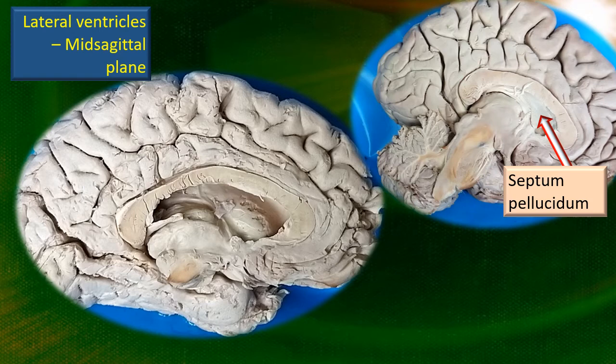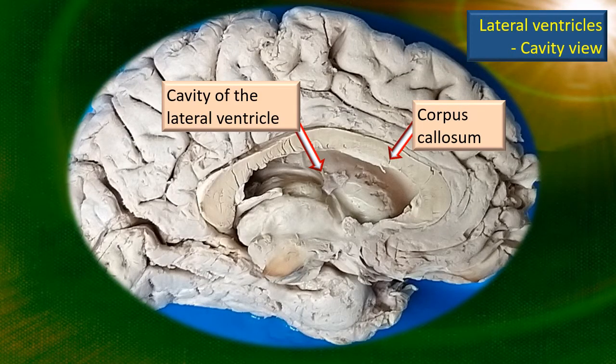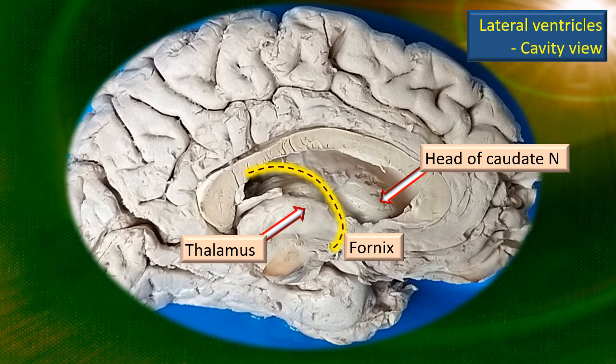Here the septum pellucidum has been removed and now you can see the cavity of the lateral ventricle. I have enlarged that photograph. You can see the huge bridge of commissural fibers — the corpus callosum — and right underneath that, the huge cavity of the lateral ventricle is visible. Very important landmarks we can already see: the head of the caudate nucleus, behind it the body of the caudate nucleus. That yellow dashed line is the fornix, and right below it you can see the thalamus. These are important items seen in the floor of the lateral ventricle.